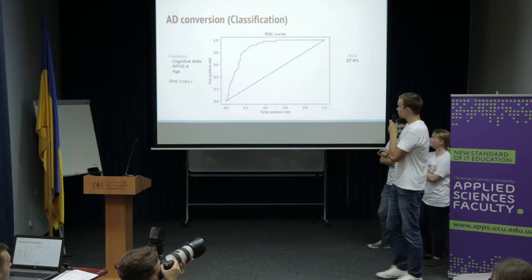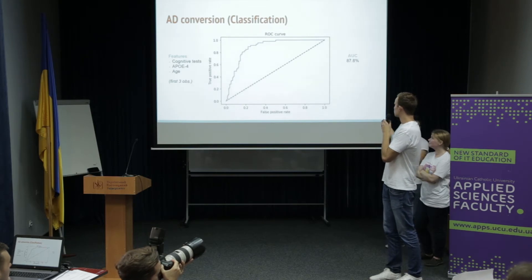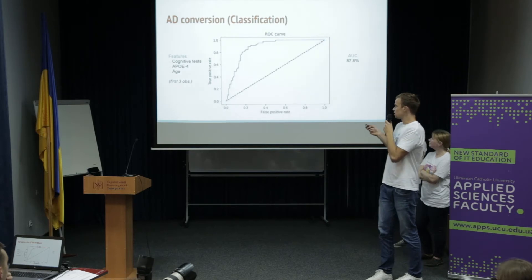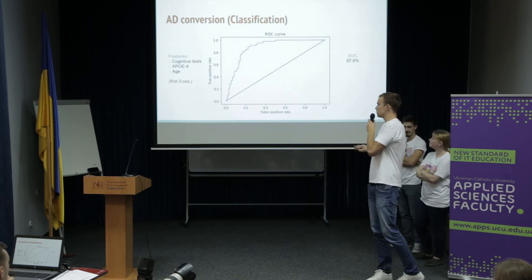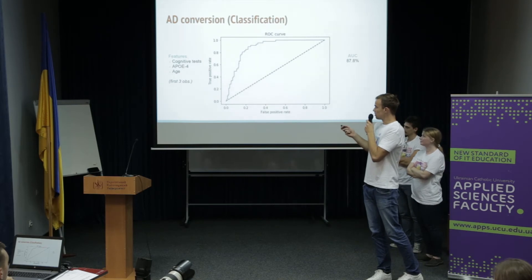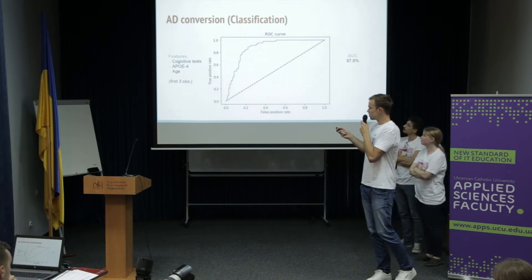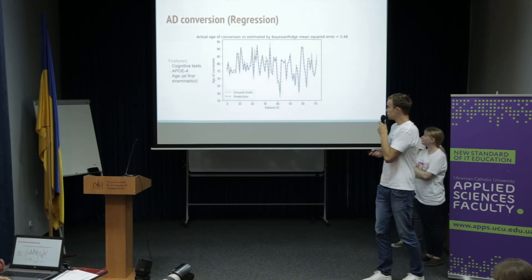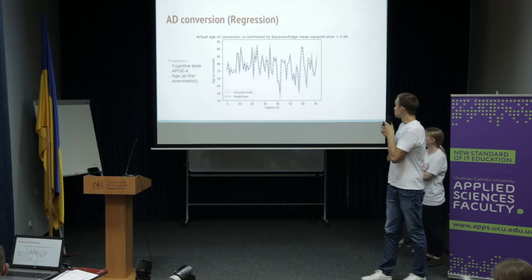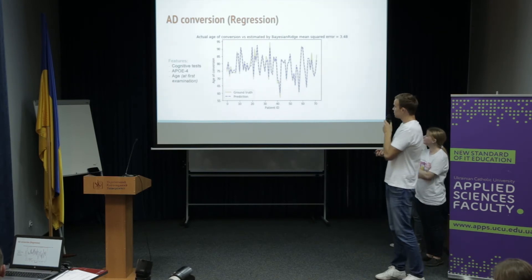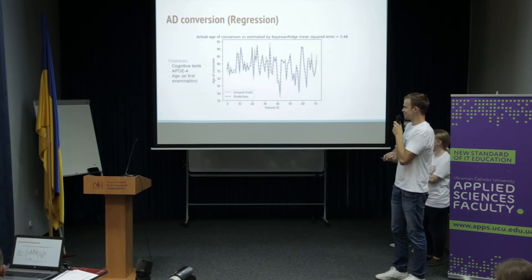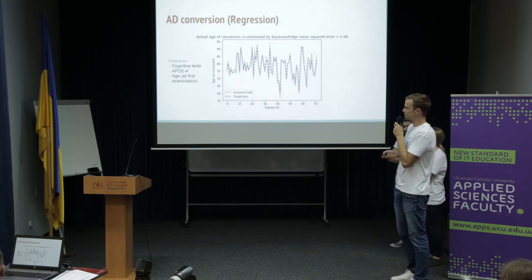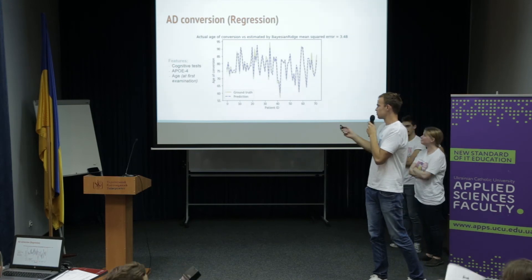For the conversion classification we used Gradient Boost, achieving an AUC of almost 88% to determine whether a patient will convert or not. For this we used just cognitive tests, the ApoE4 gene, and age. For the regression problem we trained a model with a mean squared error of 3.48, which is approximately 22 months. That sounds like a lot but it depends on the time range being predicted, and we used the same features for that.